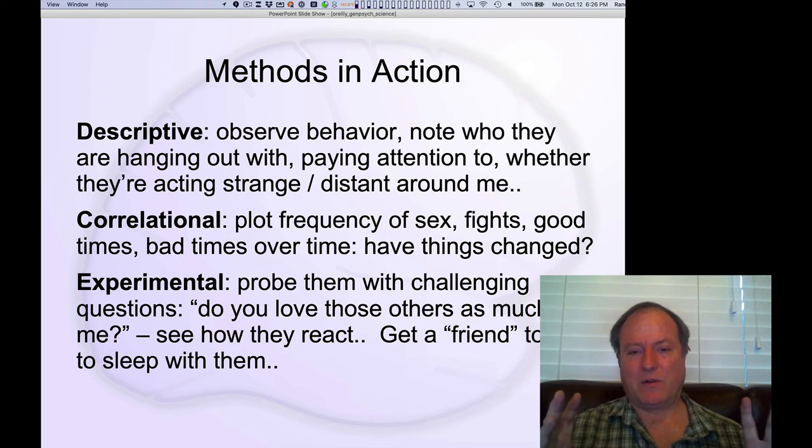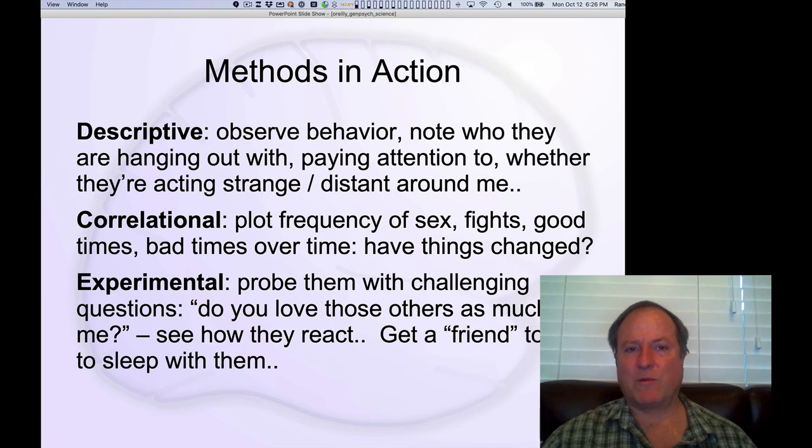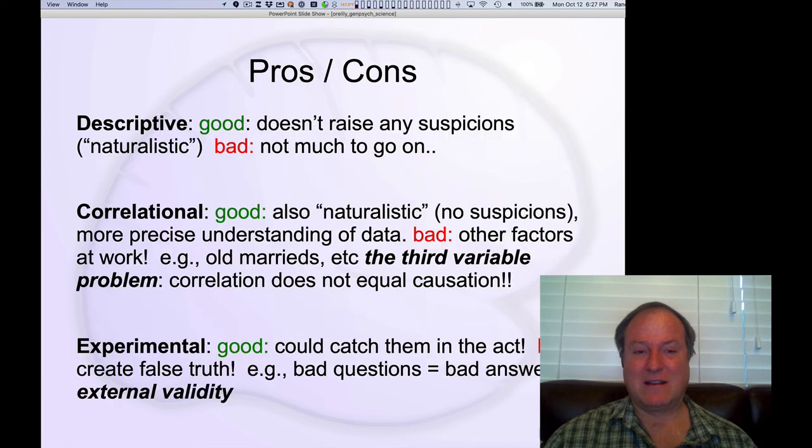And then finally, with the experimental approach, you could actually try to intervene in the system and manipulate some variables, right? So, you actually probe your partner with challenging questions. Do you love those other people as much as you love me? And see how they react. You could ask some of these horrible, unanswerable questions. You could try a manipulation of having somebody tempt them into cheating on you, right? Then you might know for sure. But obviously, that's going to be disturbing the system, right?